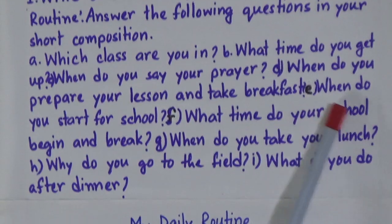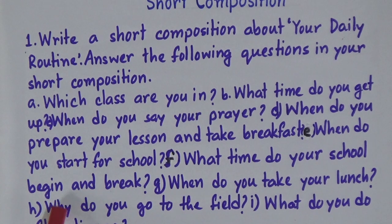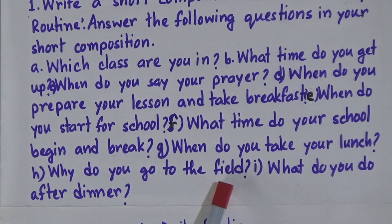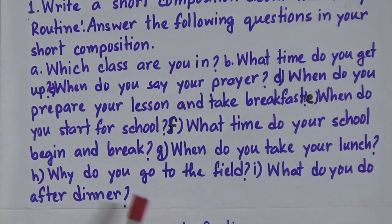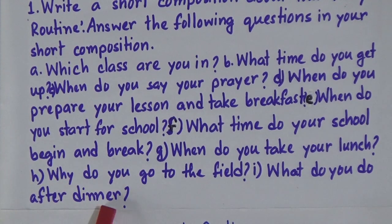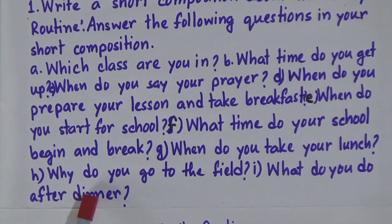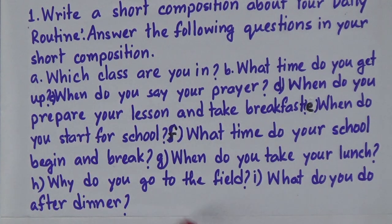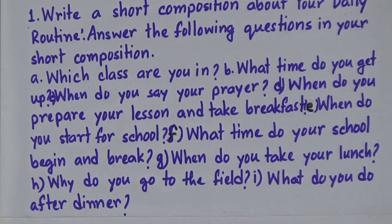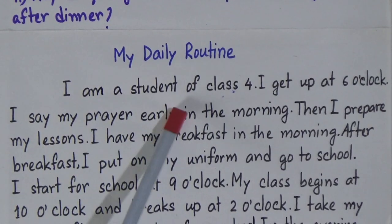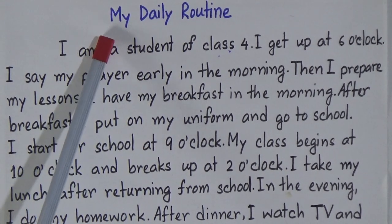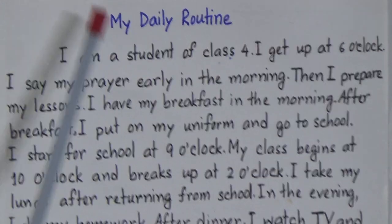Next: when do you start for school, what time does your school begin and break, when do you take your lunch, why do you go to the field, and what do you do after dinner. There are many questions but in your exam four or five questions will come and you need to write your short composition on the basis of those questions — these key points are given and you need to follow the instructions.